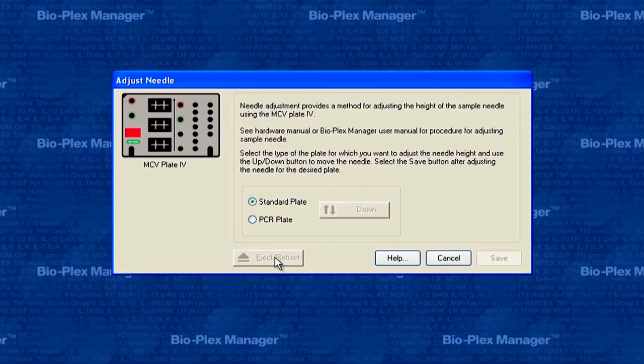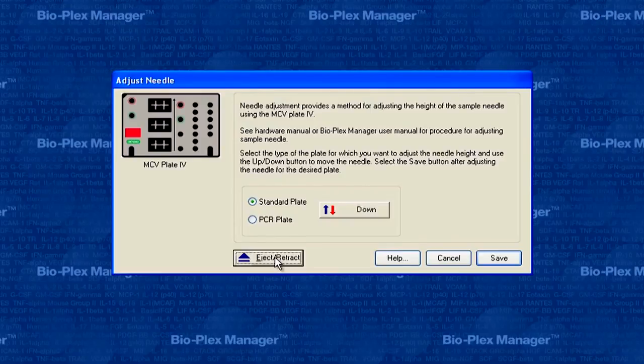Once the needle height is set correctly, click the Eject Retract button to remove the MCV plate and close the Adjust Needle dialog box.